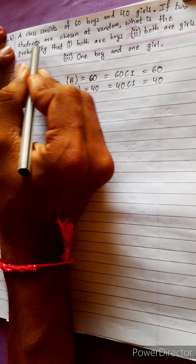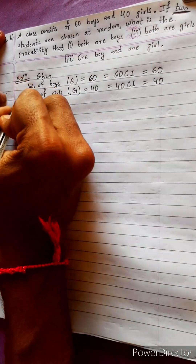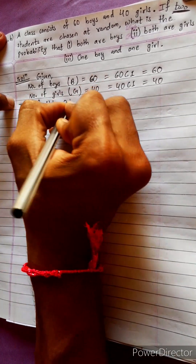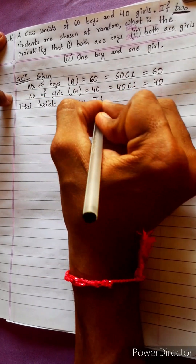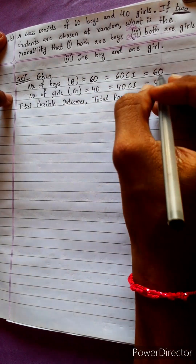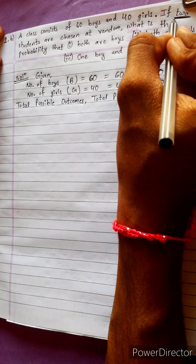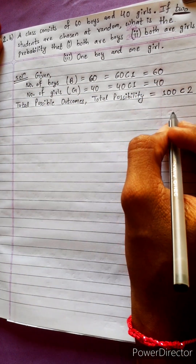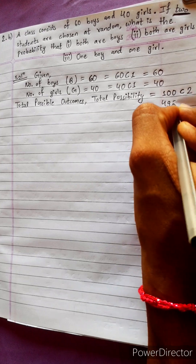If two students are chosen at random, we need total possible outcomes. Total students are 60 plus 40 equals 100. Since two students are chosen, we combine with two: 100C2, which equals 4950.